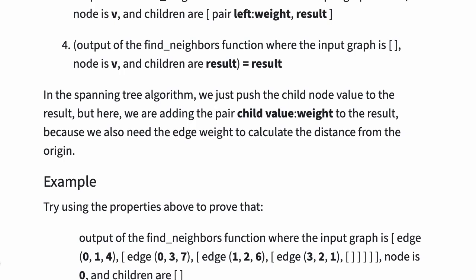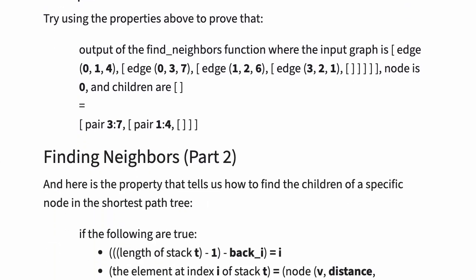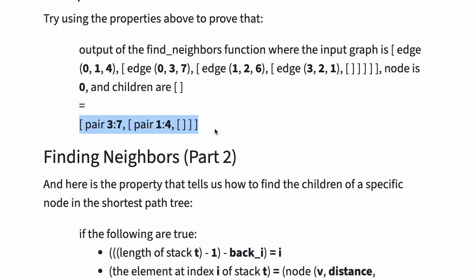In the spanning tree algorithm, we just push the child node value to the result. But here, we're adding the pair (child value, weight) to the result because we also need the edge weight to calculate the distance from the origin. For example, try using the properties above to prove that the output of the find neighbors function where the input graph is edge(0,1,4), (0,3,7), (1,2,6), (3,2,1) and node is 0 and children are empty, is equal to the stack pair(3,7) and pair(1,4).